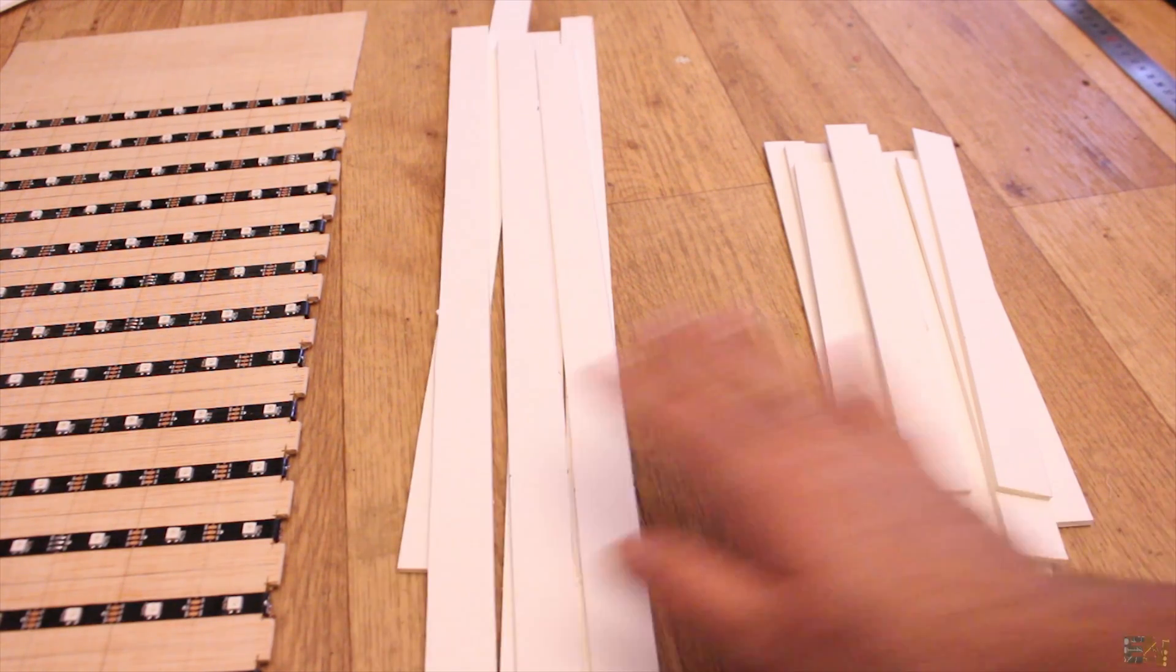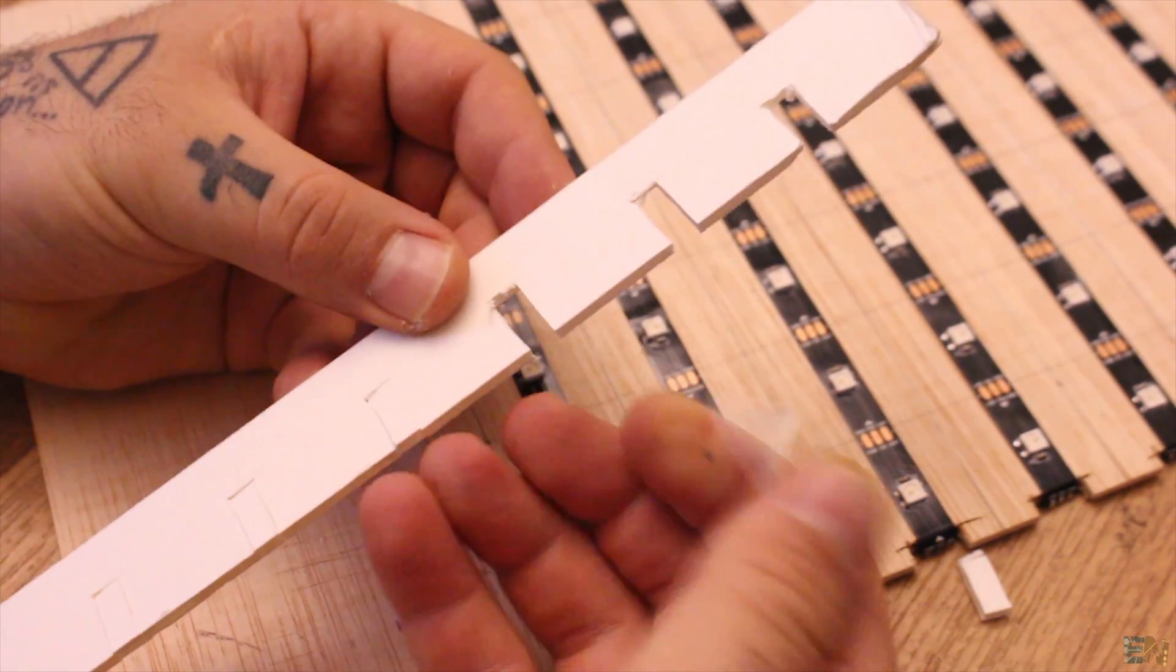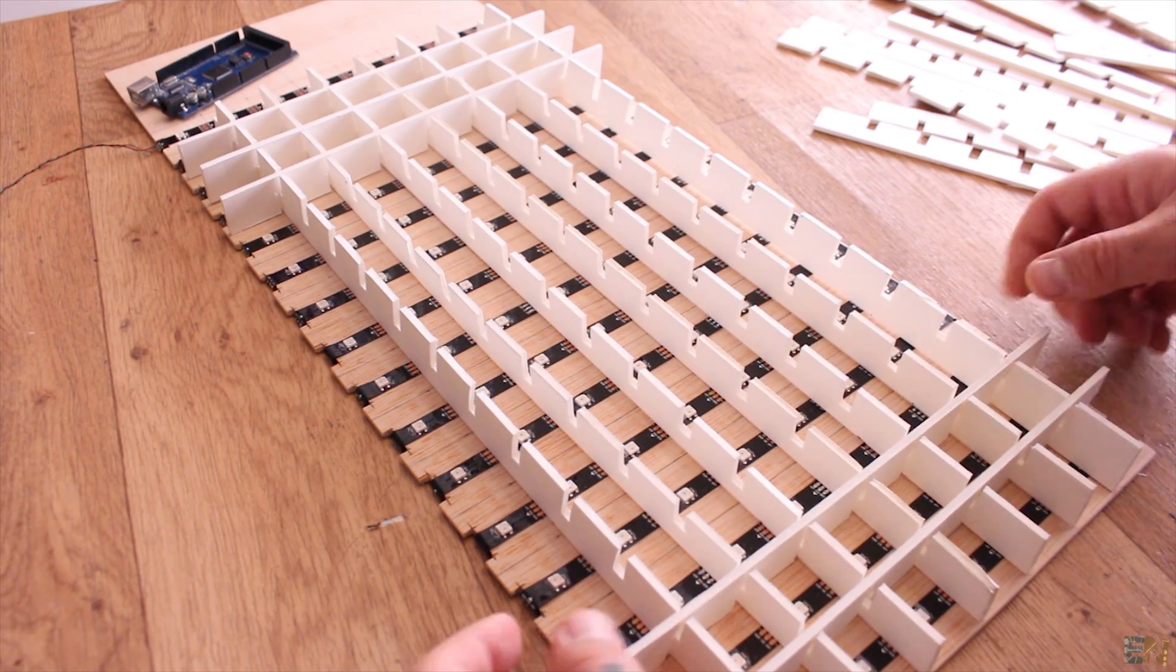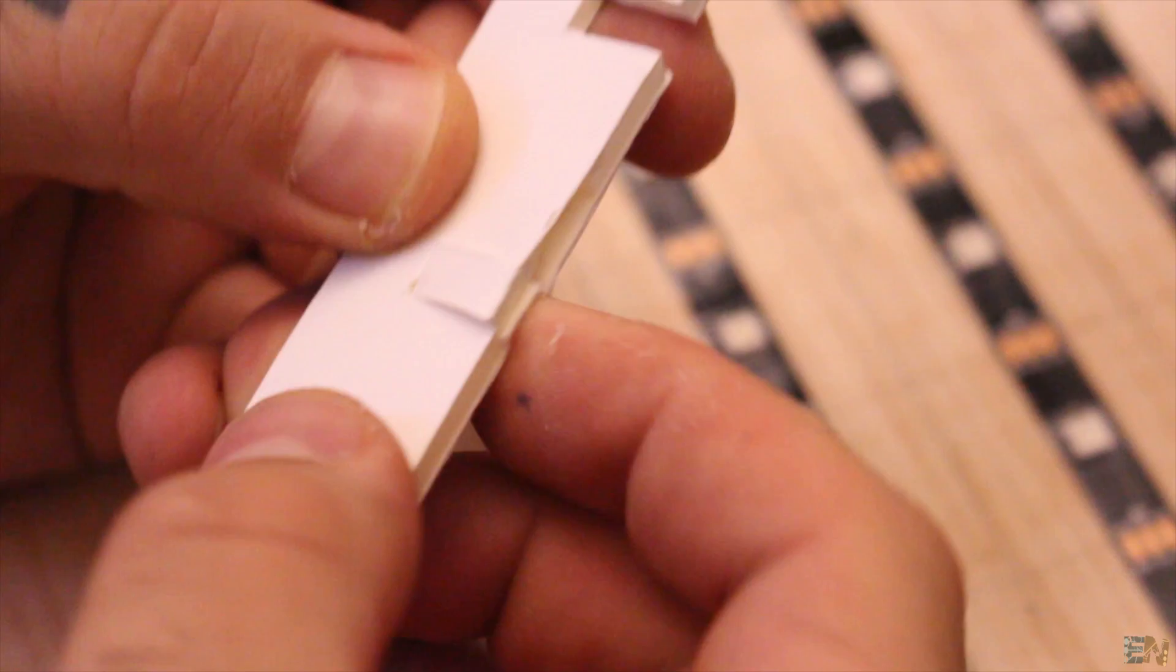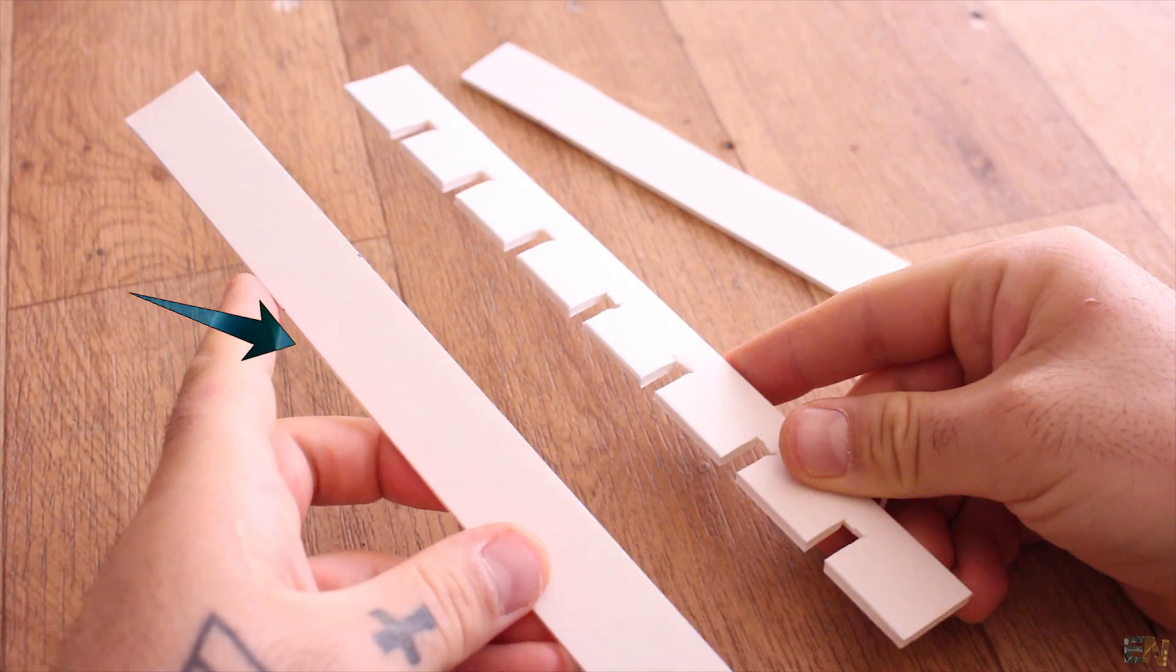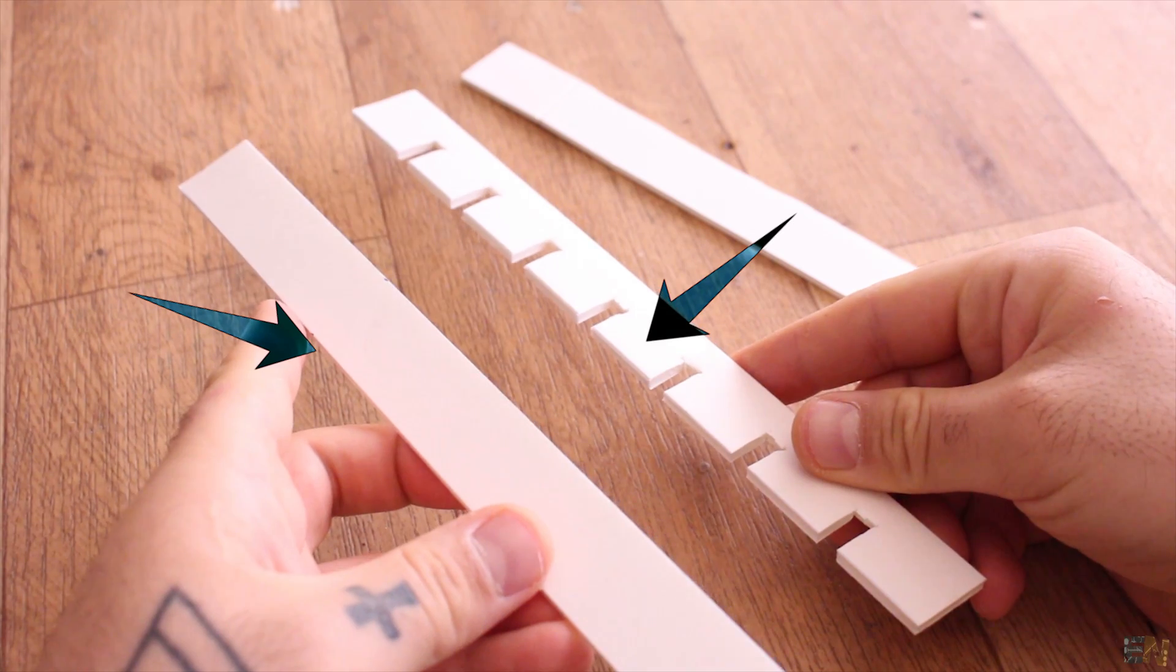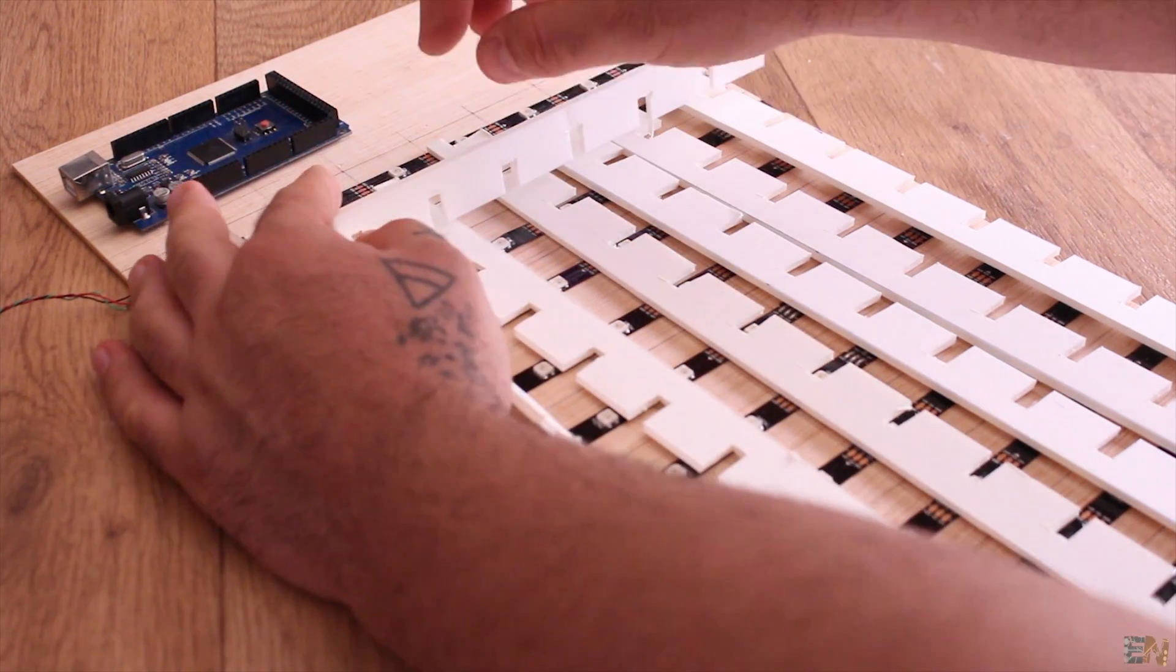So now here comes the long and boring part of this project. In order to join the long strips with the short ones and create a grid, we need to cut a small part from each one. So 7 holes in the short strip and 15 holes in the long ones. So from this, we get to this. So after more than one hour, I have all the parts, so it's time to place the grid over the LEDs.